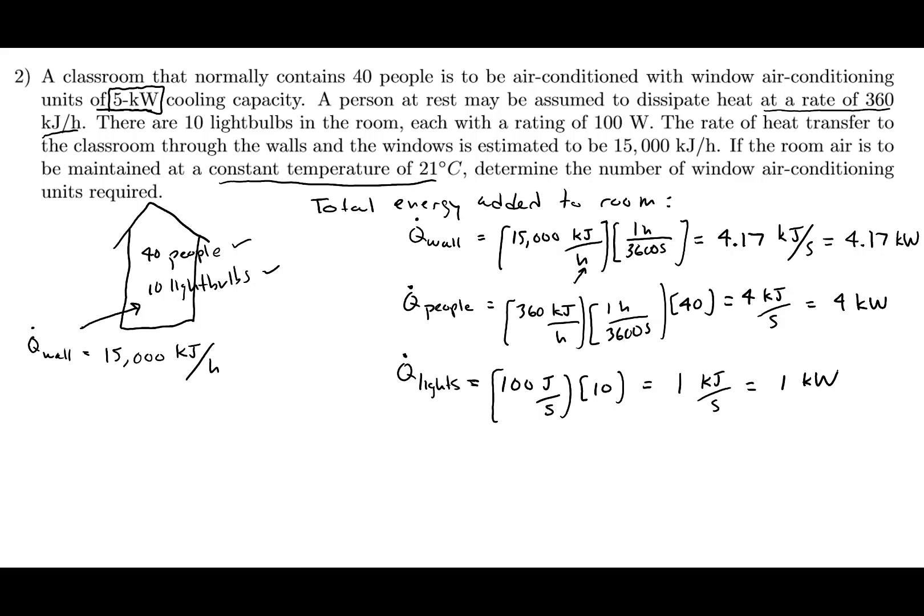Now what I can do is add up all of the heat that's added to the room, because that's the heat that the air conditioner needs to remove. Heat the air conditioner needs to remove is equal to Q wall plus Q people plus Q lights. This works out to 9.17 kilowatts.